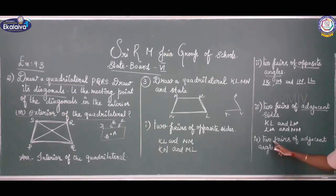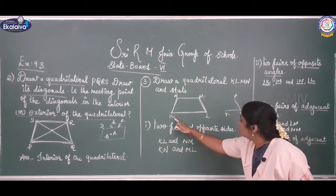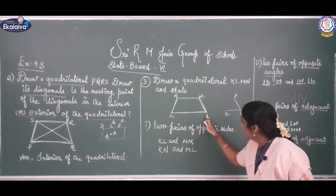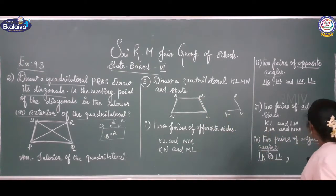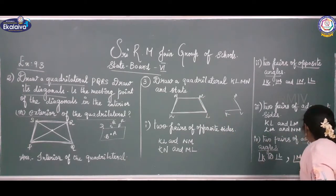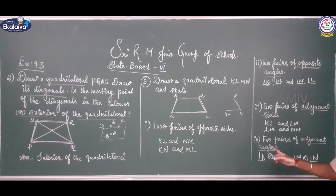Now moving to the pairs of adjacent angles. The adjacent angles are: angle K and angle L, and angle M and angle N are adjacent angles. So we have covered opposite sides, opposite angles, adjacent sides, and adjacent angles.